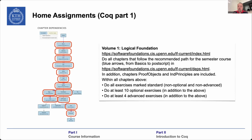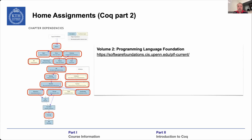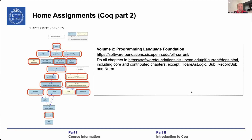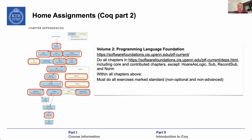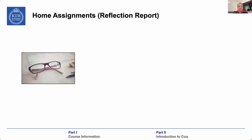For the second part — Volume 2 — it focuses on programming language semantic foundations and follows the same structure. You can find the link to it and see which parts are included. You should do all the standard exercises and at least 10 optional and 4 advanced ones. This is the main bulk of the home assignments.